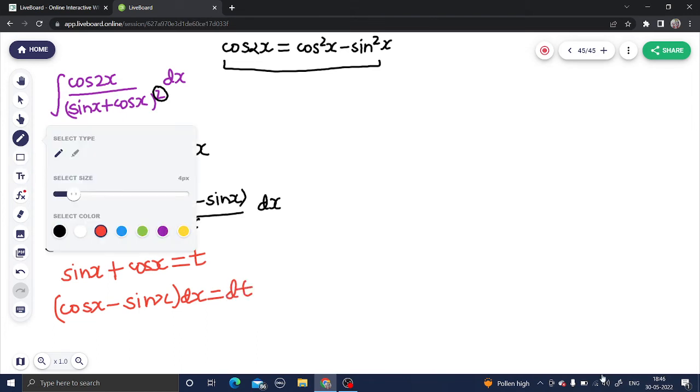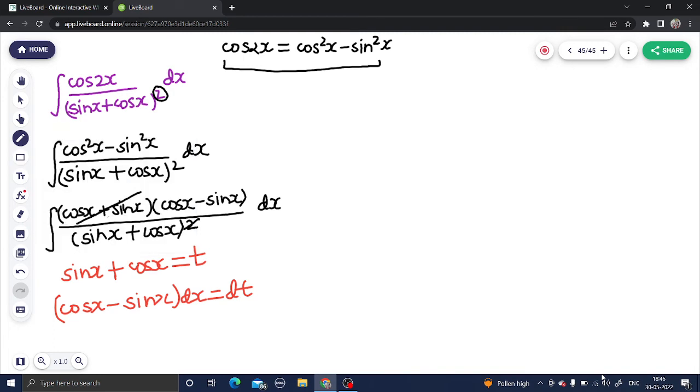Now coming back to my integral, can you see cos x minus sin x dx in numerator? That can easily be replaced by dt and denominator of course is your t. dt by t integration, and you know very well that is log mod of t plus a constant c.